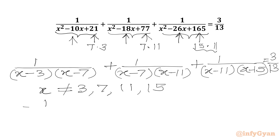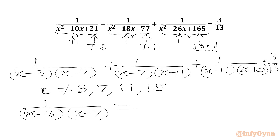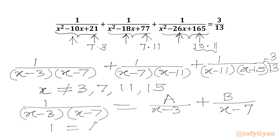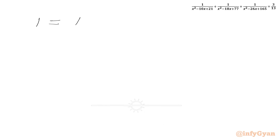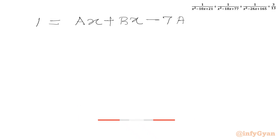Now we are going to write 1 over (x minus 3)(x minus 7) using partial fractions. We write A over (x minus 3) plus B over (x minus 7). Simplifying the right-hand side gives 1 equals A(x minus 7) plus B(x minus 3), which expands to (A plus B)x minus 7A minus 3B.